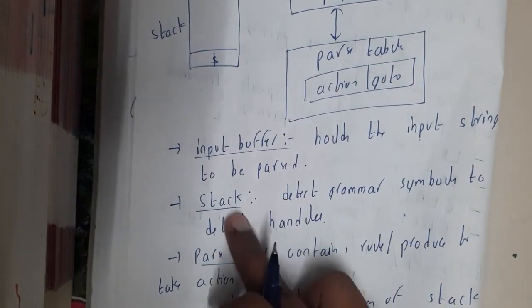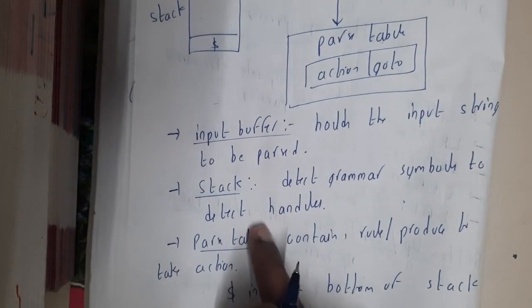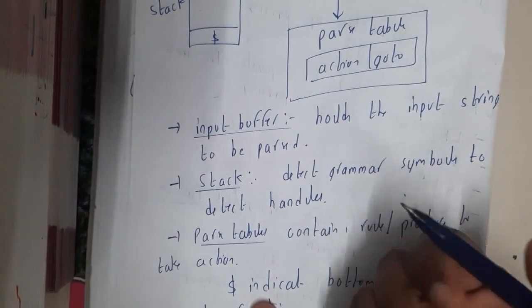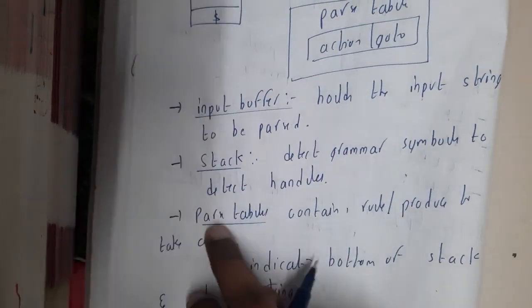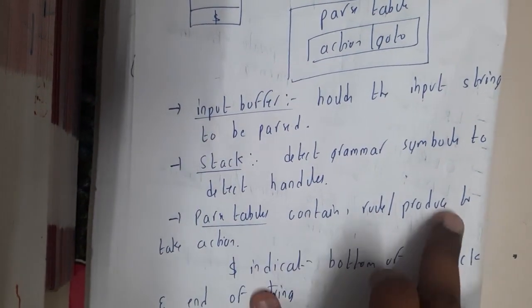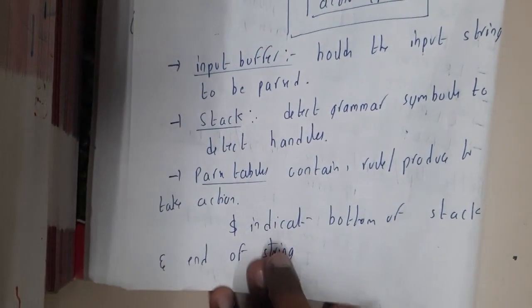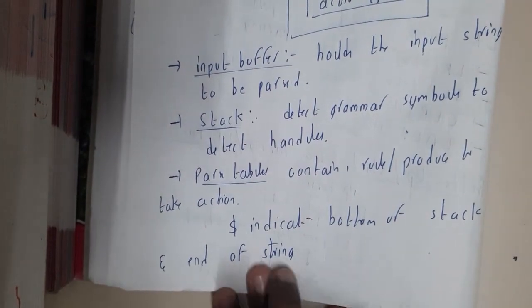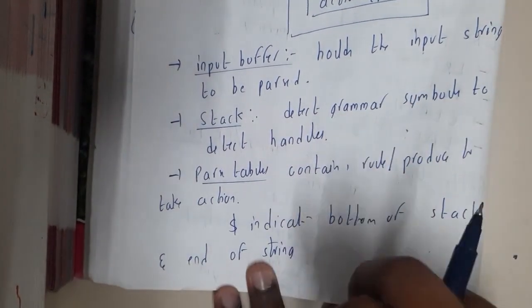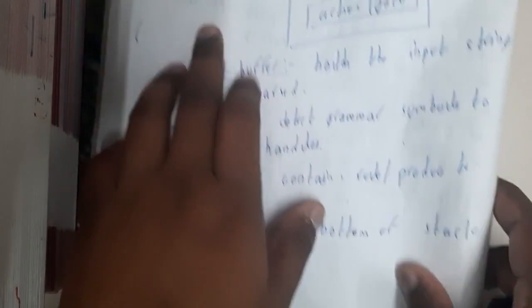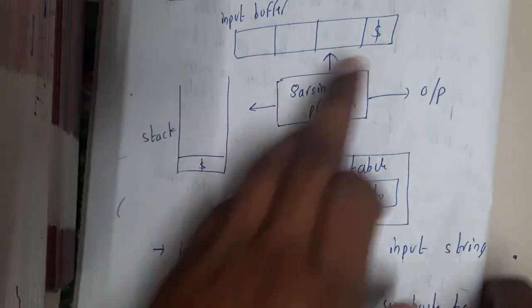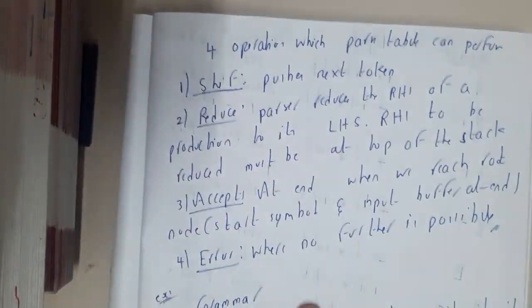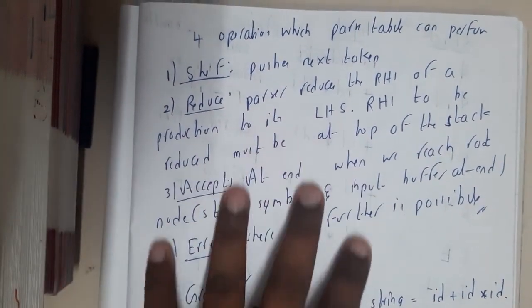The input buffer holds the input string to be parsed. The stack is used to detect grammar symbols and to detect handles. The parser table contains the rules or productions for the actions. Dollar indicates the bottom of the stack and the end of the string — it is added to both.